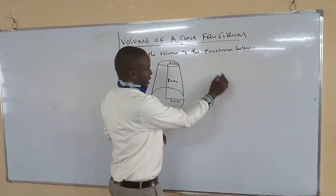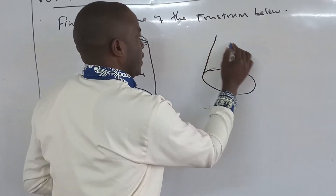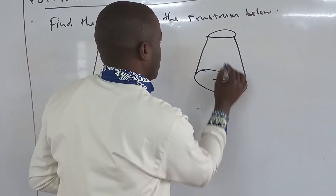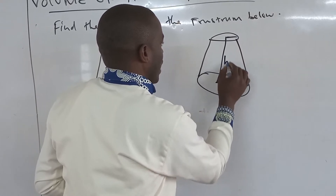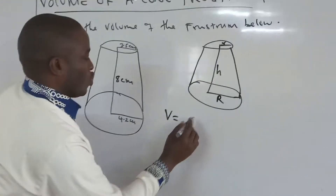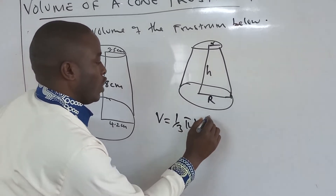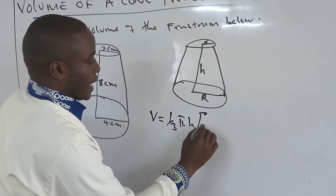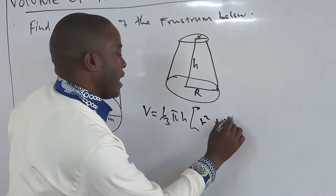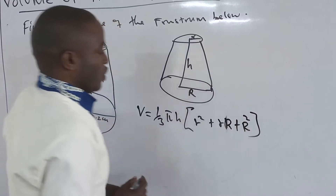The method I'm going to show you is: if we have a cone frustum like it is here, where this is your h, this is your small r, and this is your large R, then the volume equals one-third times π times h, in brackets: r squared plus r·R plus R squared. So that is the formula.